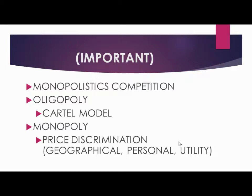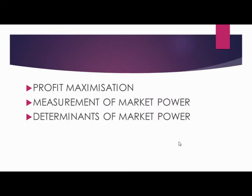Next comes monopoly. In monopoly, there is a single seller in the market. Comparing the market structures: monopolistic competition has many large sellers, oligopoly has a small number, and monopoly has just one. Key topics in monopoly include price discrimination and features of the monopoly market. Next after that comes profit maximization.